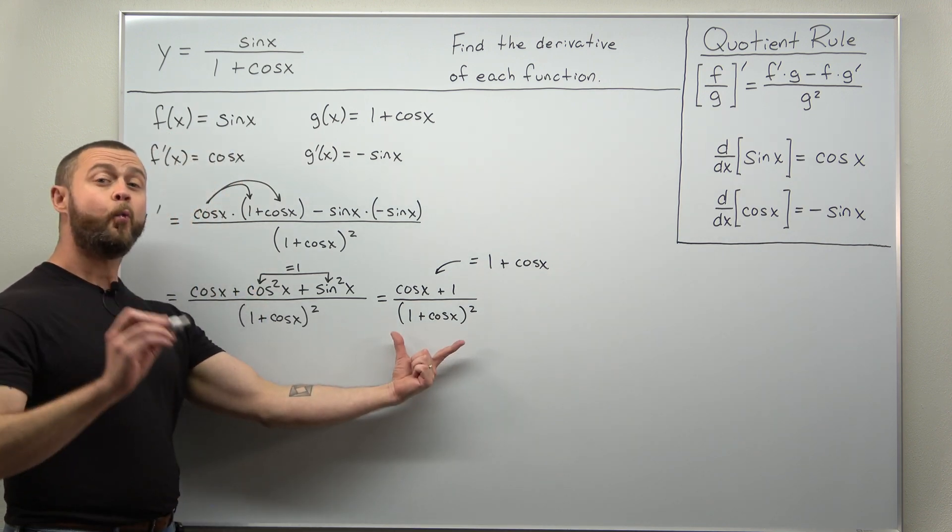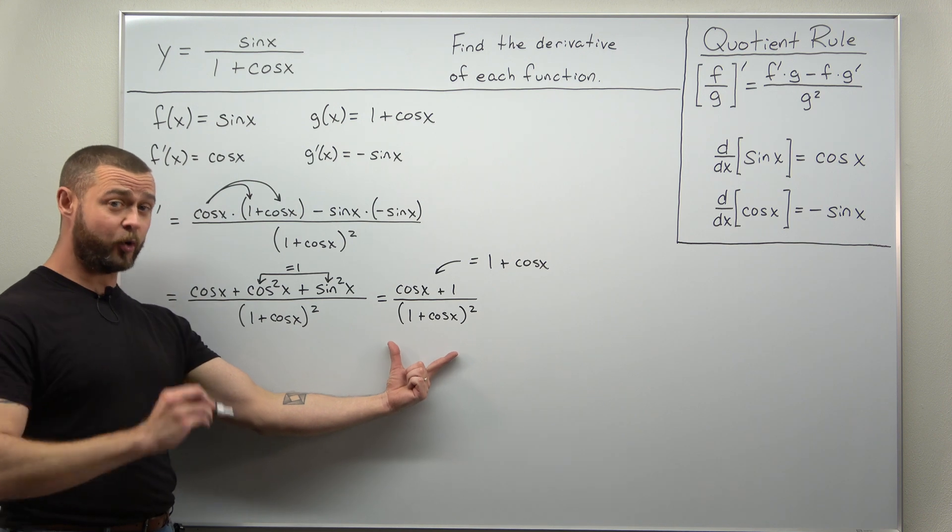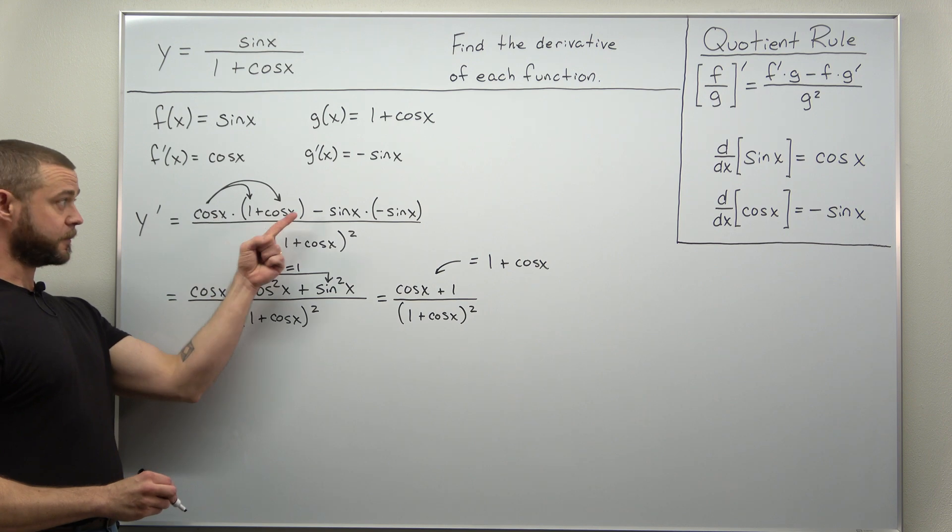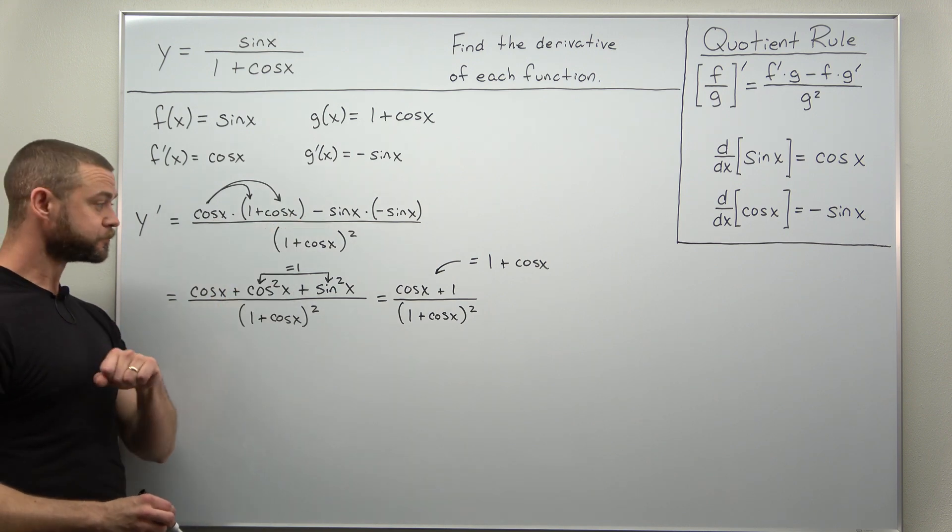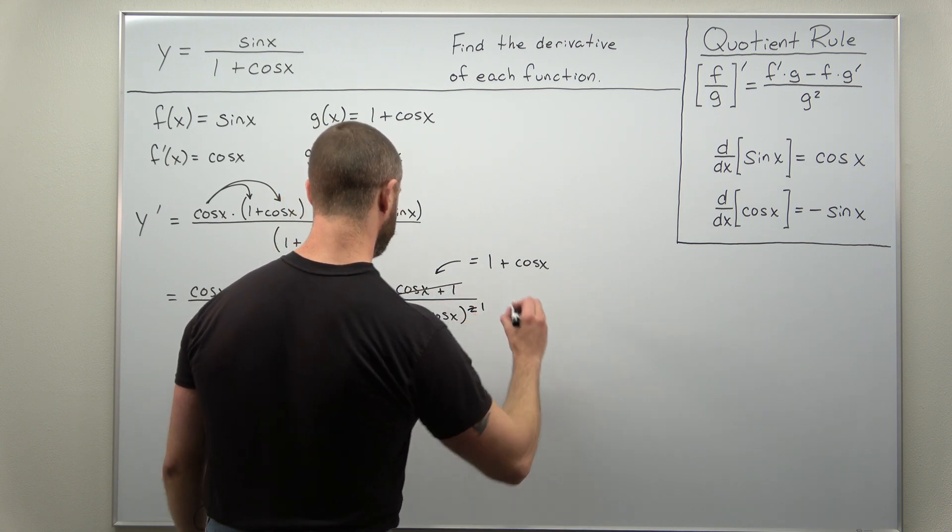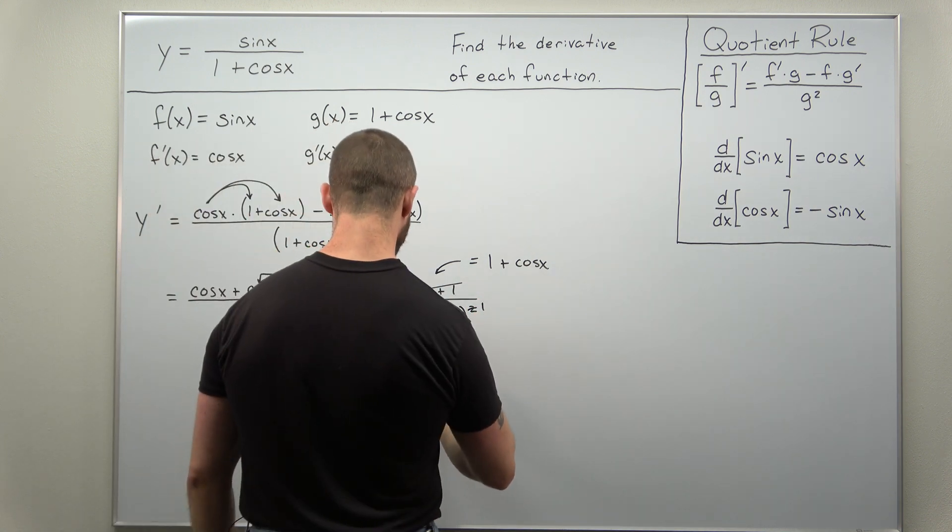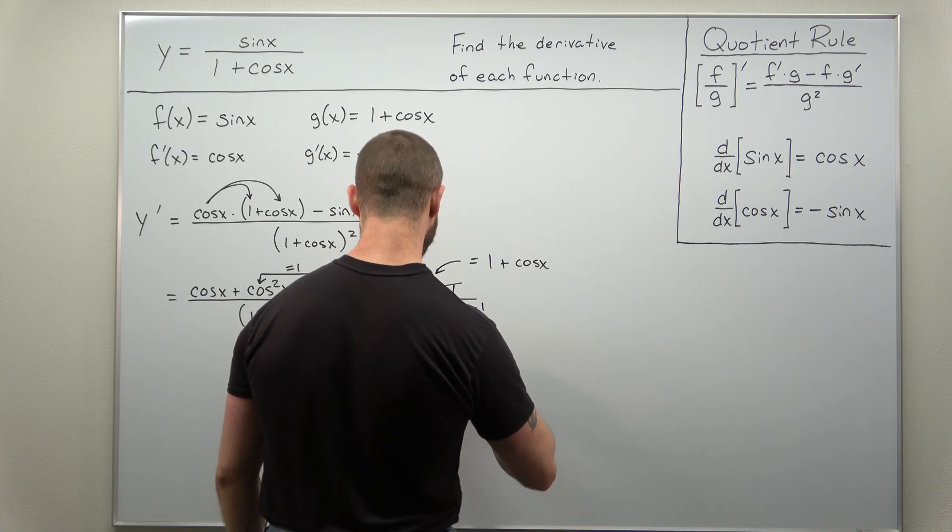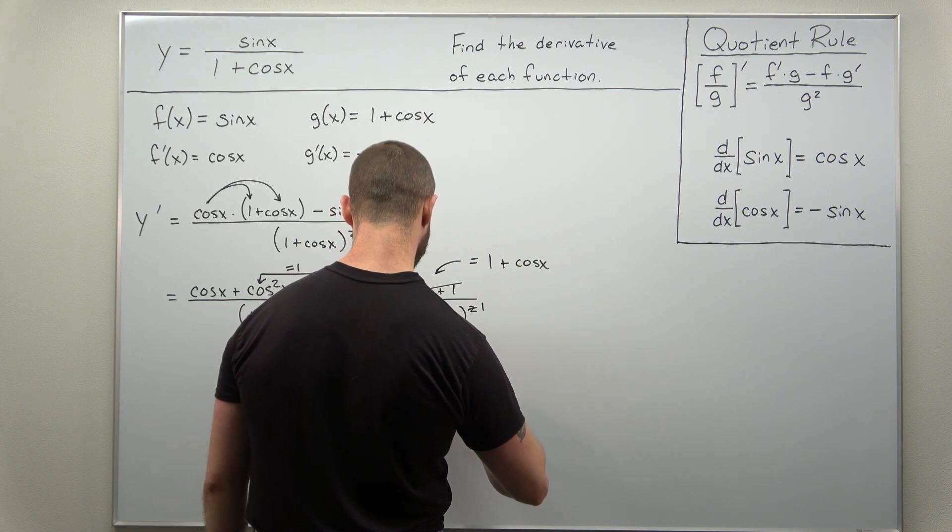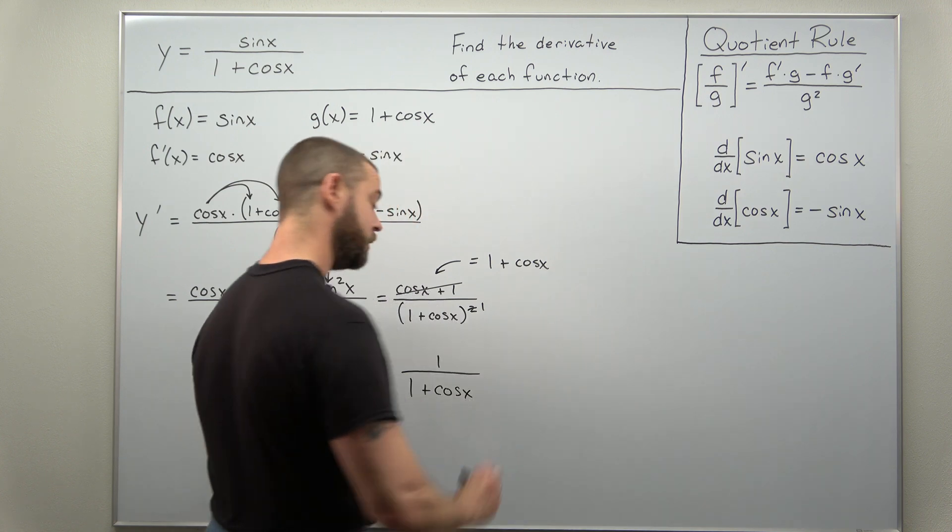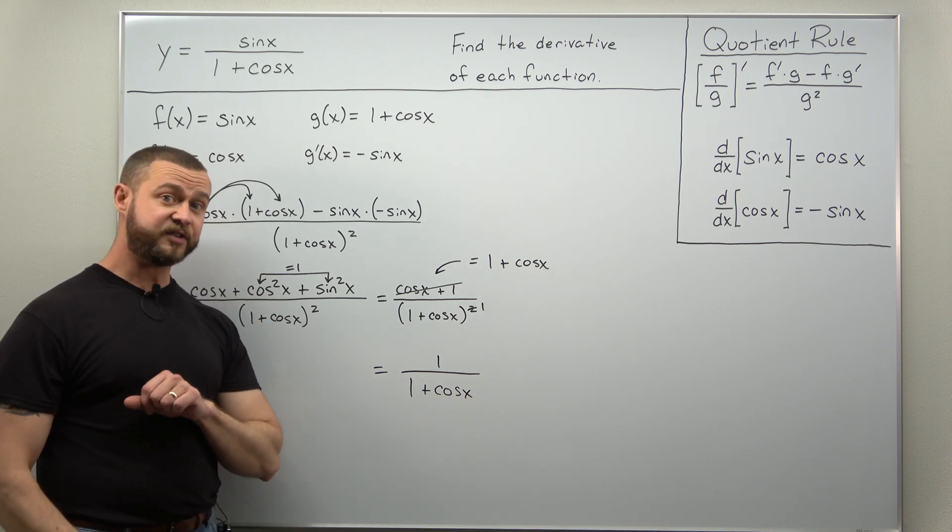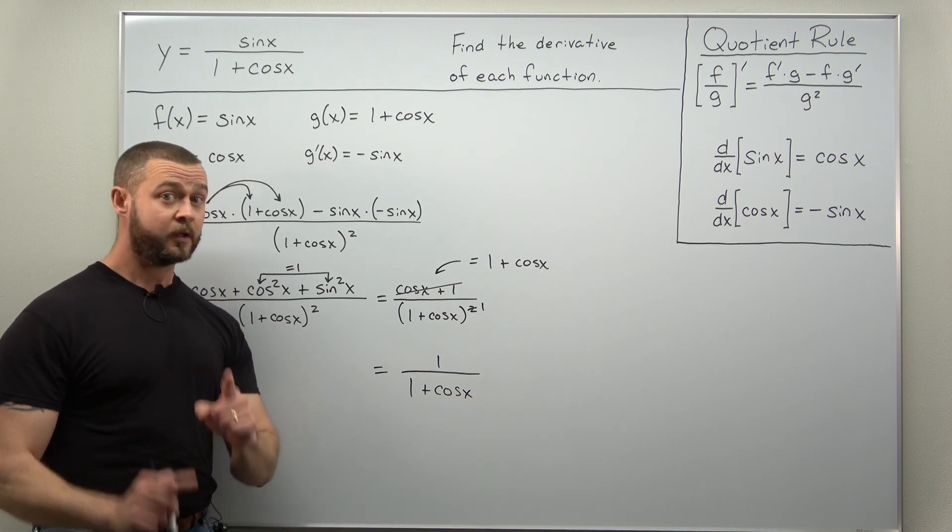Again just be careful. We have in the numerator at this point a factor of 1 plus cosine of x in the numerator but not here. That minus prevents that. So we can simplify. One factor cancels out in the denominator. So we have now in the numerator 1 and then 1 power less in the denominator. And we can write that denominator now as just 1 plus cosine of x. No power on the outside there other than 1. And there we go.